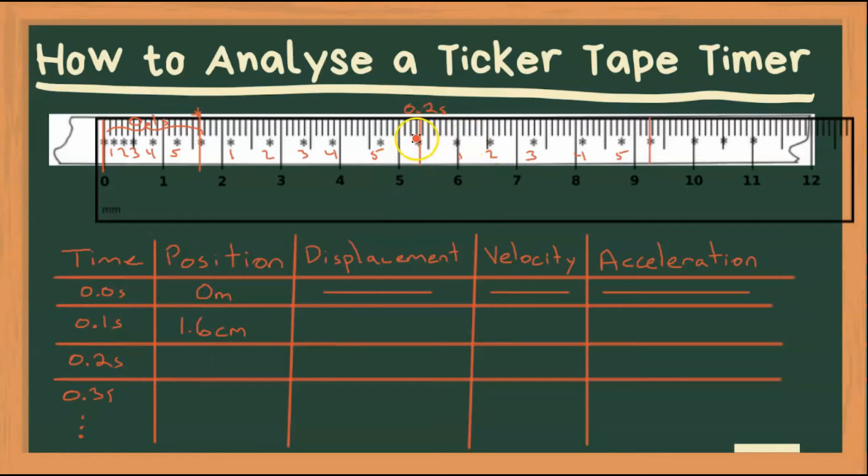And then our 0.2 second mark, which is over here, is at about 5.3. I'm going to round up to 5.4 centimeters. And then our 0.3 second mark is over here at 9 point, and I'm going to round up again, 9.3 centimeters.